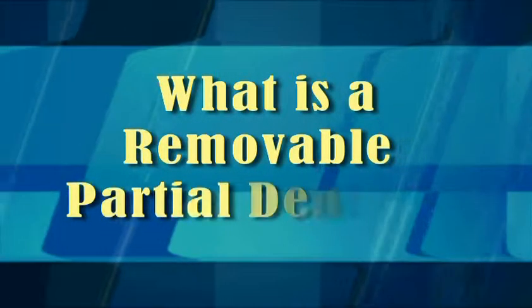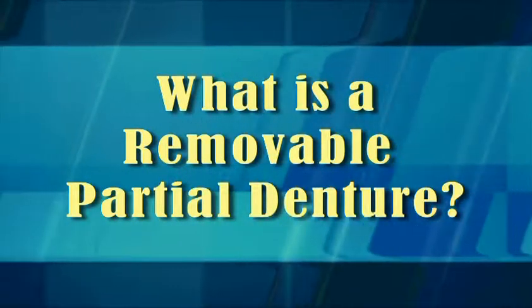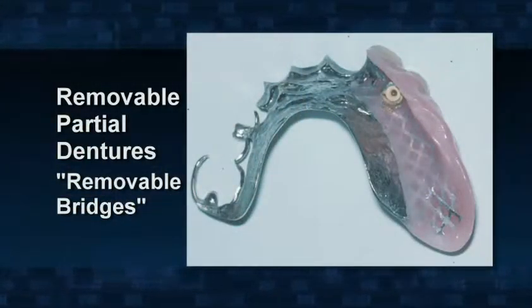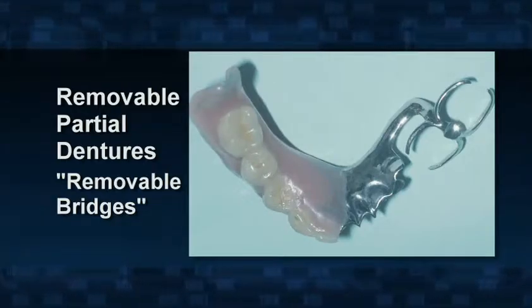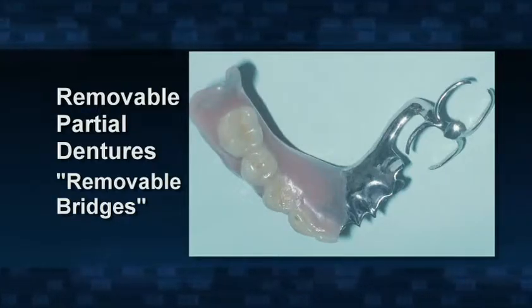A removable partial denture is a custom-made replacement for your missing teeth, usually constructed with a framework of strong metal covered with gum-colored plastic, with lifelike teeth placed in the areas of missing teeth. The partial denture seats securely into your mouth and can be removed at will for cleaning and repair. Most patients remove their partial dentures several times per day.